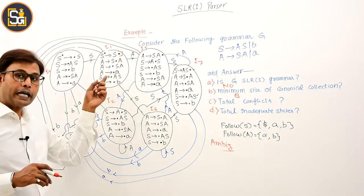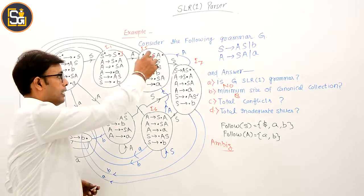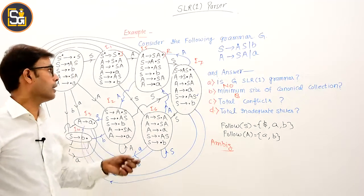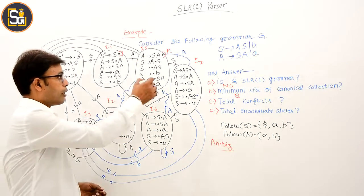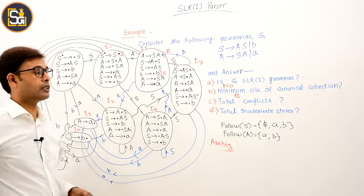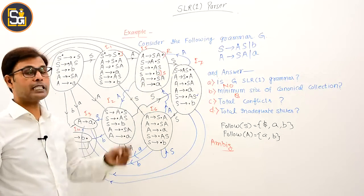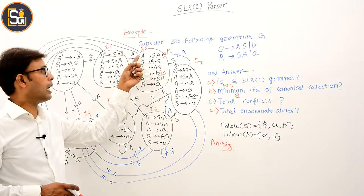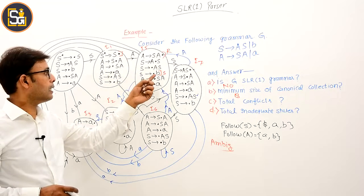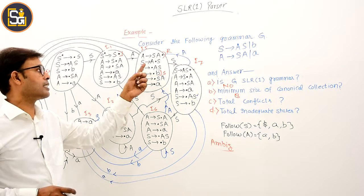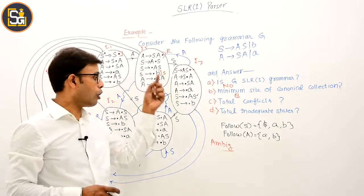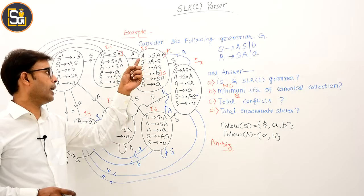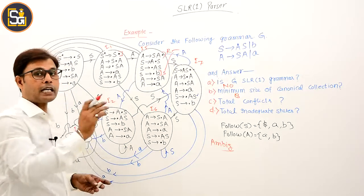In I5, a reduce item is visible. To find total conflicts: if this is a shift and we check whether FOLLOW(A) contains the terminal after the dot — that is B — then it is a shift-reduce conflict. FOLLOW(A) was already computed and contains A and B. Since B is in FOLLOW(A), these two together form a shift-reduce conflict.